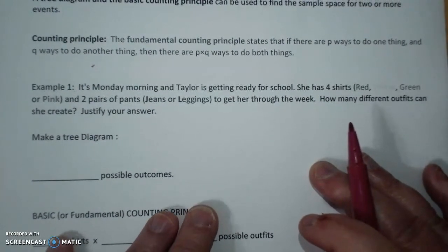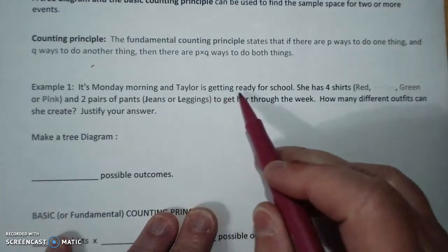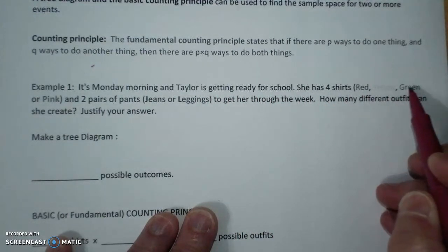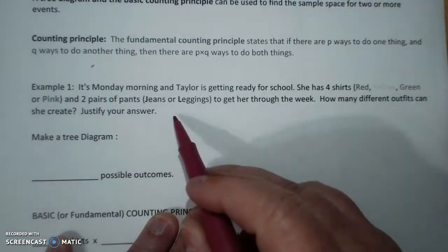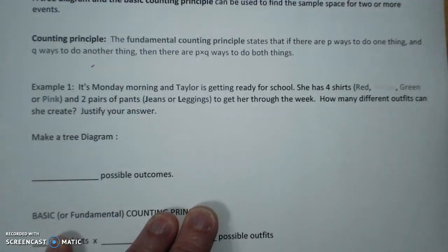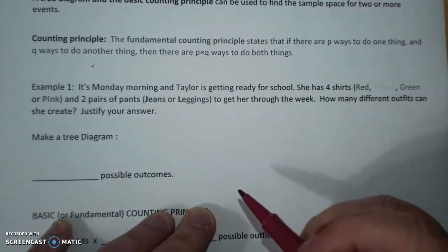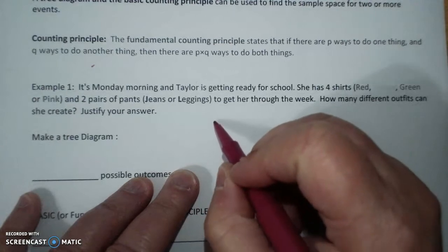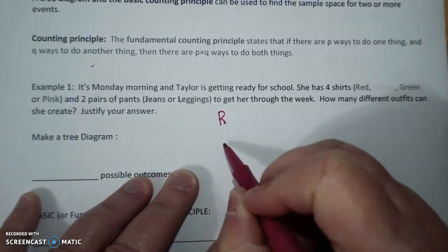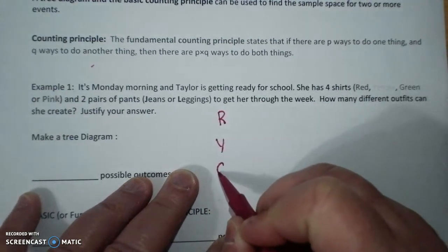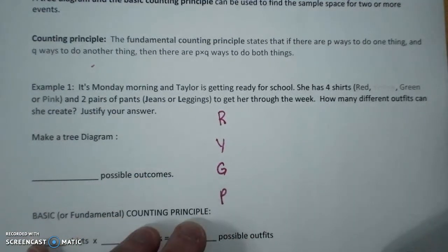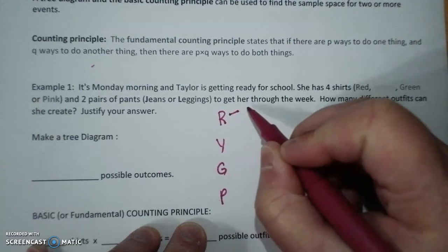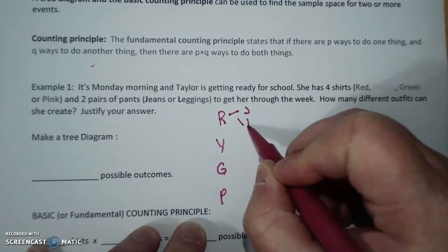Here's your example. It's Monday morning and Taylor is getting ready for school. She has four shirts, a red, a yellow, a green, and a pink, and two pairs of pants, jeans or leggings, to get through the week. How many different outfits can she create? So I am going to do my shirts, and I'm going to do red, yellow, green, and pink. And if I wear my red shirt, I can wear my jeans or my leggings.